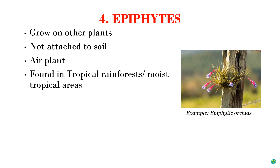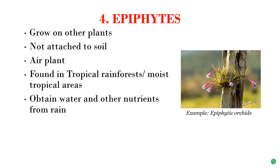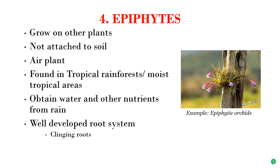Epiphytes' ability to grow above ground level gives them more access to sunlight than herbs growing on the ground. These plants obtain water and some nutrients from rain; they may also receive nutrients released from supporting plants by decomposition. They absorb water through their roots or specialized leaves. Despite growing on other plants, their root system is extensively developed. There are two types of roots: clinging roots, which fix the epiphyte firmly on the surface of the supporting plant, and aerial roots, which hang downward and absorb moisture from the atmosphere.